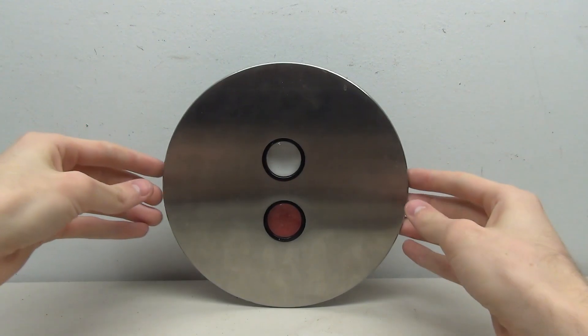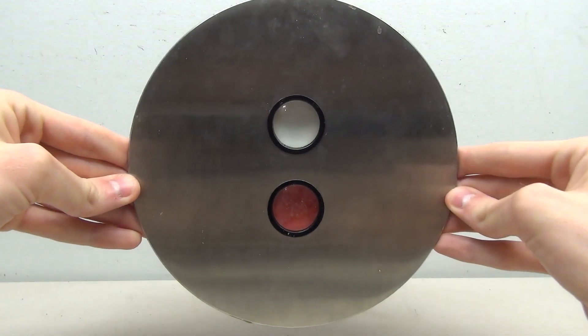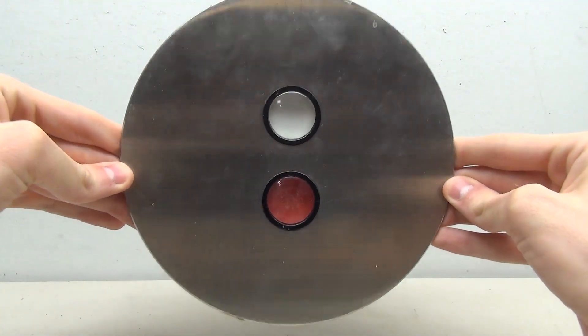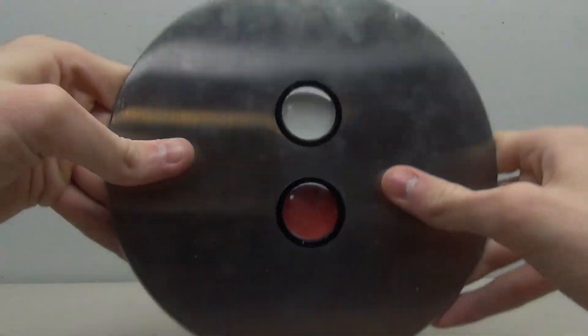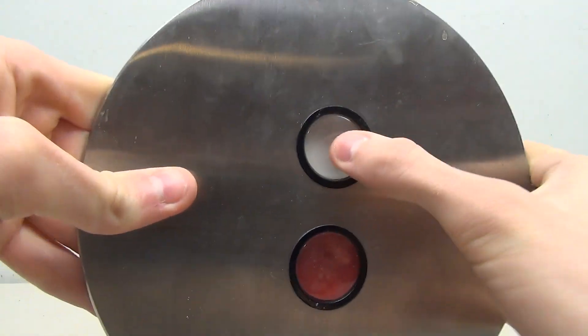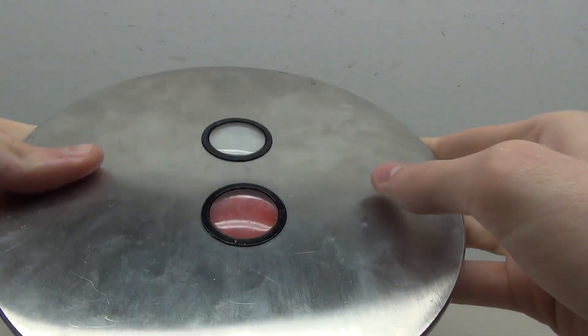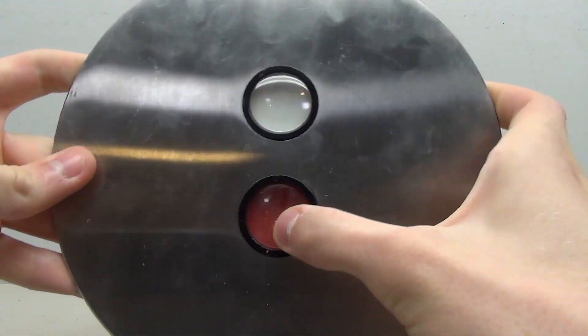So today we have another one of those quick and easy wiring projects. This one is on this round EPCO call station, and as you can see it definitely likes to roll around. But this is just a basic EPCO call station that came off an old set of Westinghouse elevators. It's kind of neat, it has a red and white button.